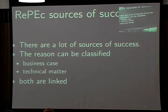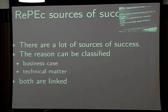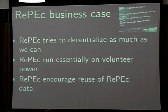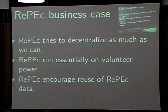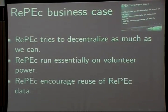RAPIC overall is considered a success, and there are both business and technical reasons for this. On the business side, we try to decentralize as much as we can. The centralized service relies mainly on volunteer power, while the institutional depositories may be run by people doing it as part of their jobs. We also encourage the reuse of RAPIC data — we try to aggressively push out the data we've collected because we believe it's in the best interest of the people maintaining these repositories.